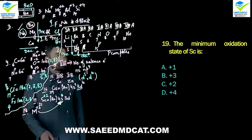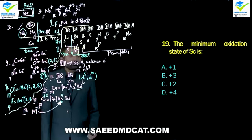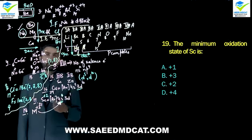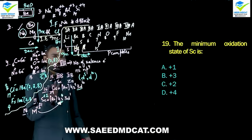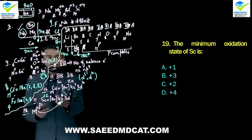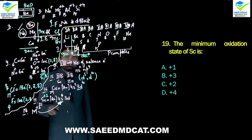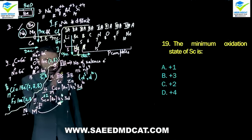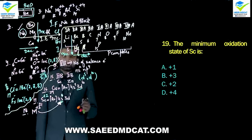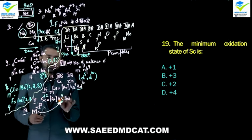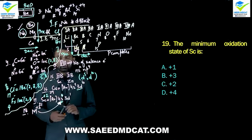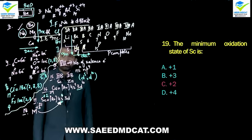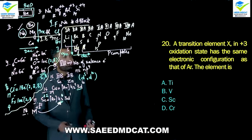Question 19: The minimum oxidation state of scandium is what? We emphasize this point repeatedly because students commonly make mistakes here. To find the minimum oxidation state of scandium, look at the number of s electrons (which is 2) and the number of unpaired d electrons. The s electrons are two, so the minimum oxidation state should be +2 accordingly.